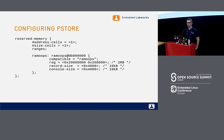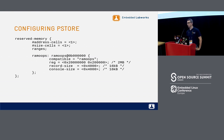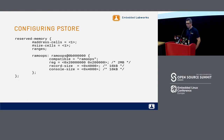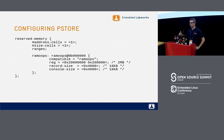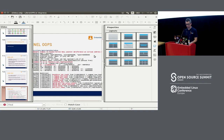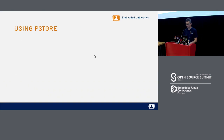To configure pStore on ARM, you first enable it in the kernel, then configure the device tree to reserve part of physical memory for storing these messages. I'm allocating two megabytes of memory to store kernel messages using the ramoops driver with a specific configuration in my device tree.